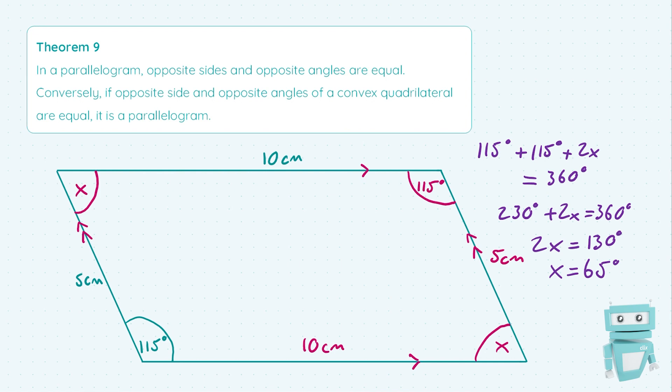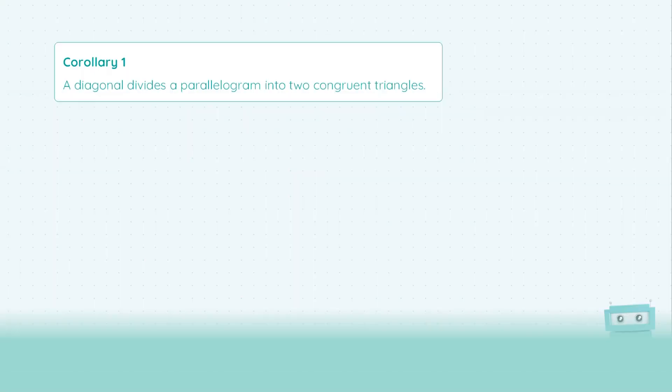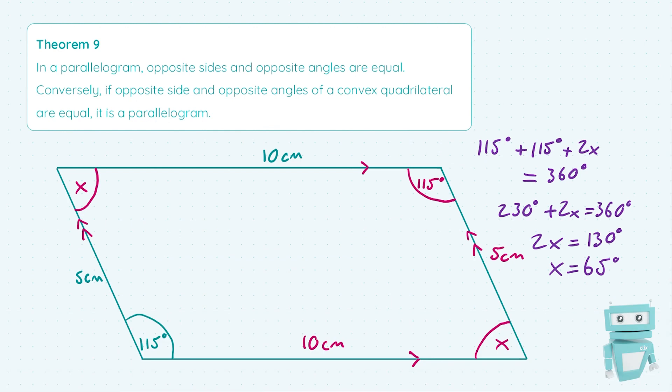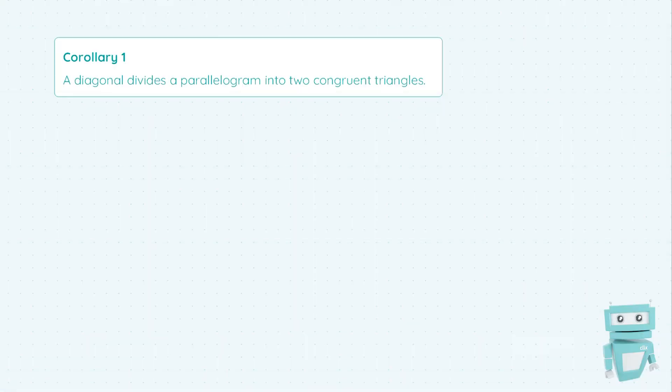That is how you find all the angles in a parallelogram given only one angle to begin with, and that covers it for our opposite sides and opposite angles being equal. Now moving on to Corollary 1 — a corollary is simply a statement which follows on from a theorem. Based on the information given in the theorem, this corollary states that a diagonal divides a parallelogram into two congruent triangles.